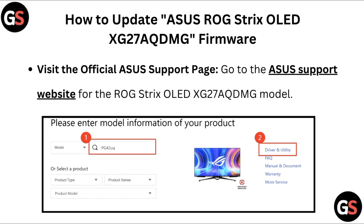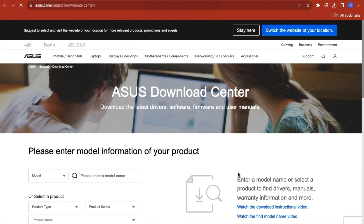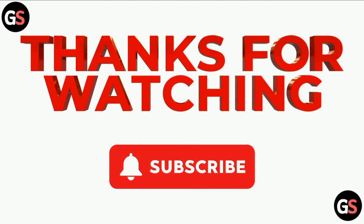To update firmware for the ROG Strix OLED XG27AQDMG, visit the official ASUS support website for the model. Navigate to the firmware section on the support page and download the latest firmware version available. Thank you for watching.